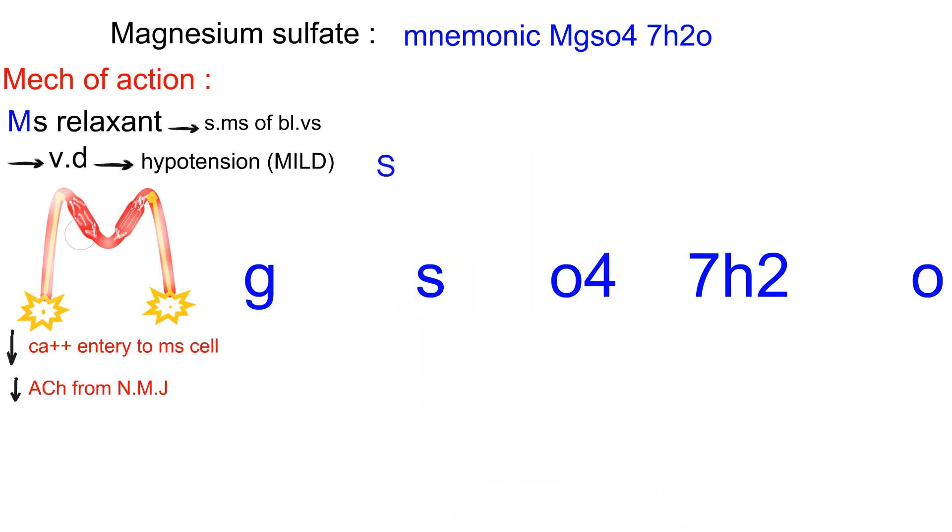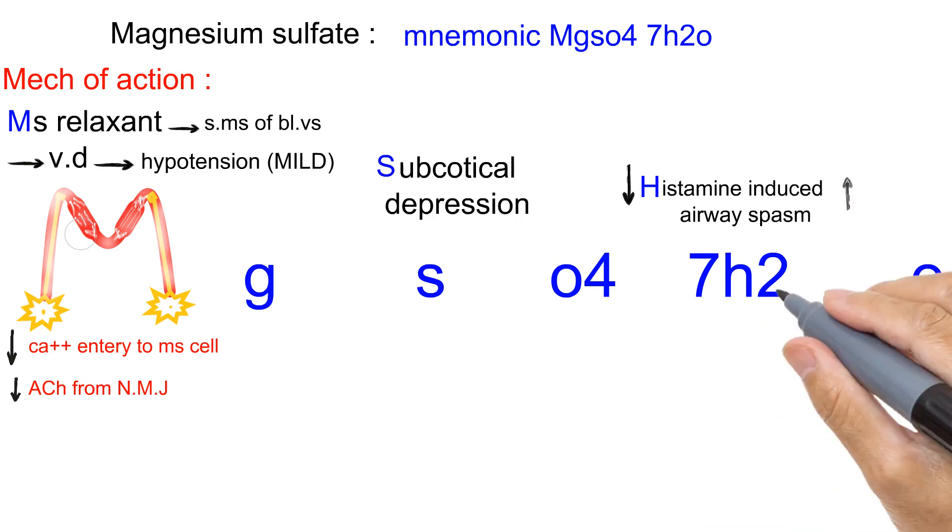The S letter is subcortical depression. The H letter: decreased histamine-induced airway spasm. The O letter increases the output of urine. It is a mild diuretic.